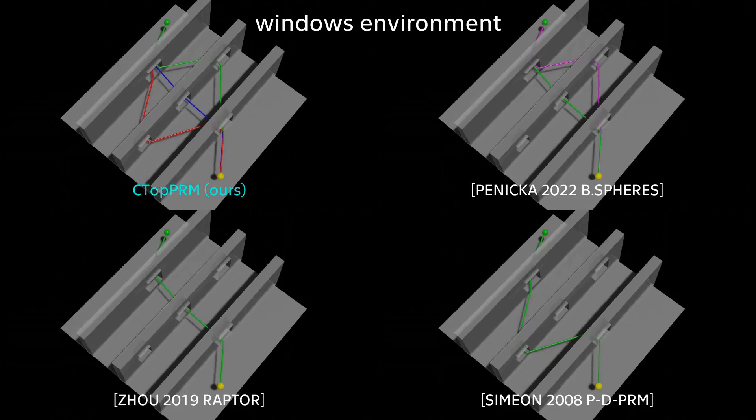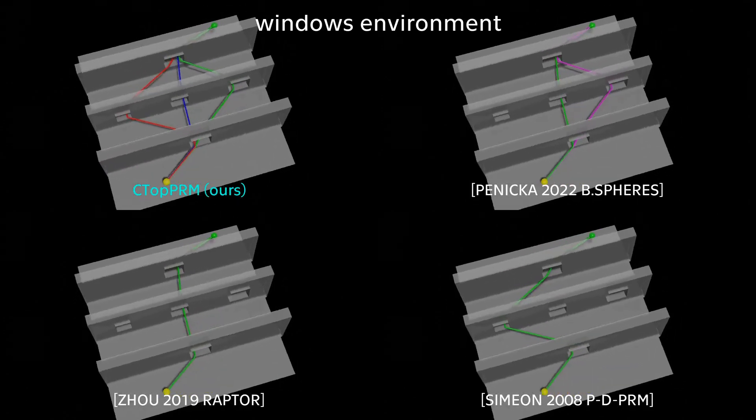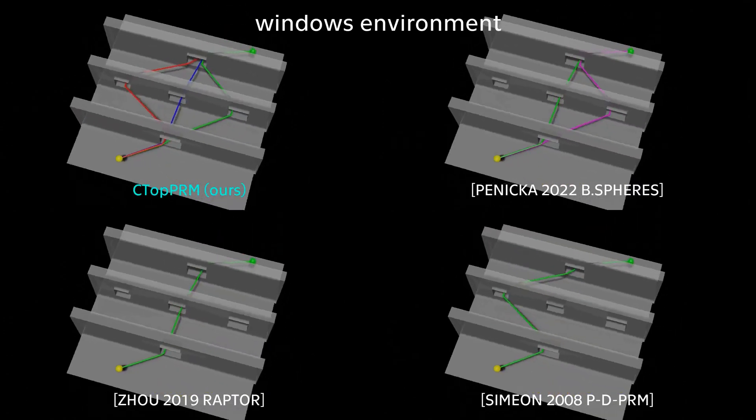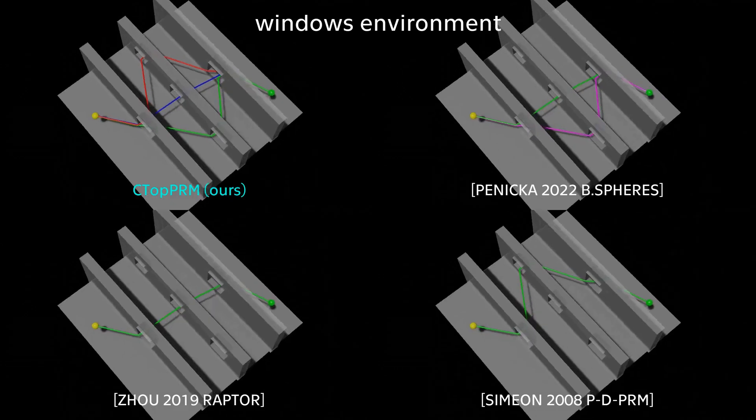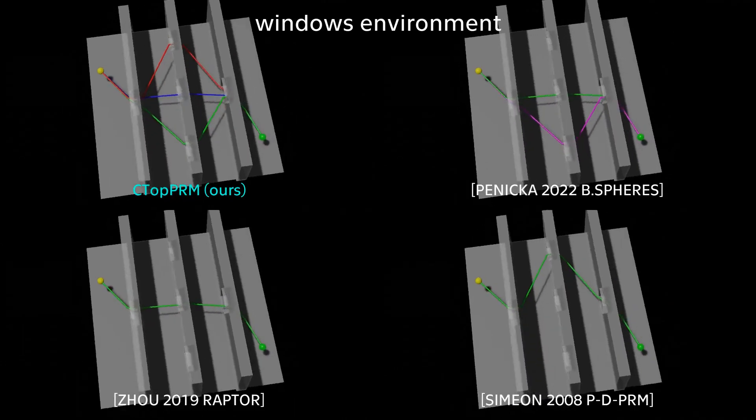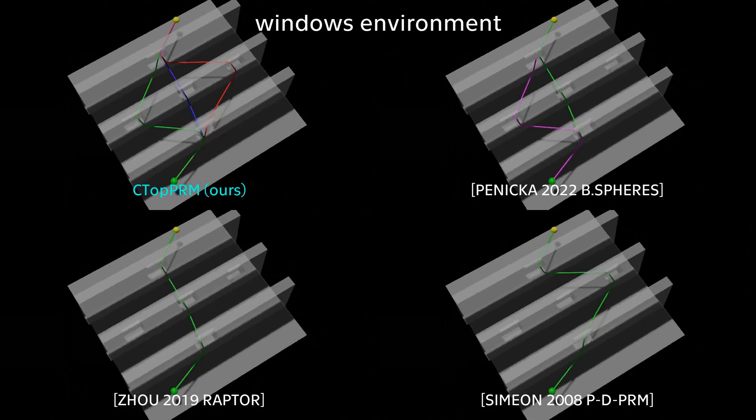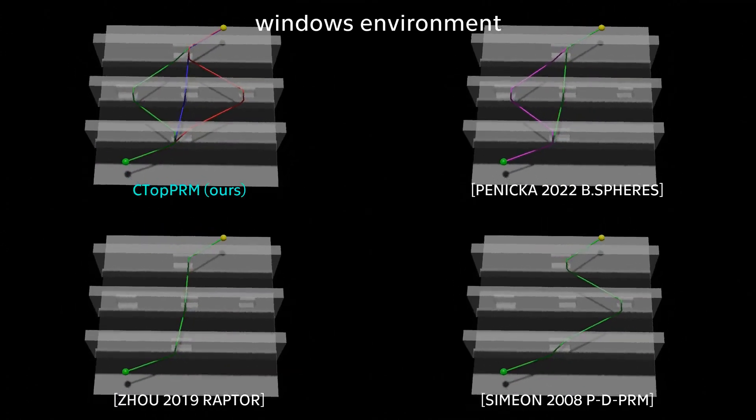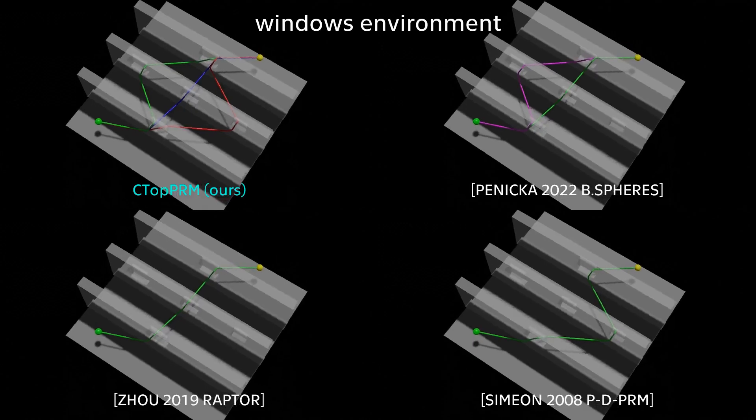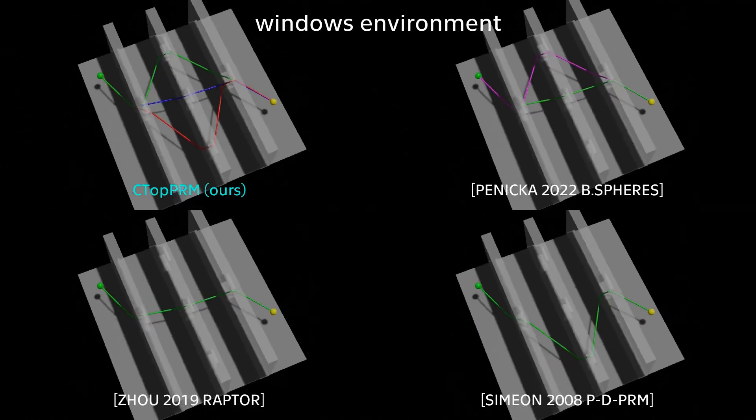We evaluate the performance of our method in a Windows environment, where the maximum number of homotopy classes is easily determinable. CTOPPRM manages to find all the distinct paths in 94% of test cases, while other related methods do so in less than 80% of cases.